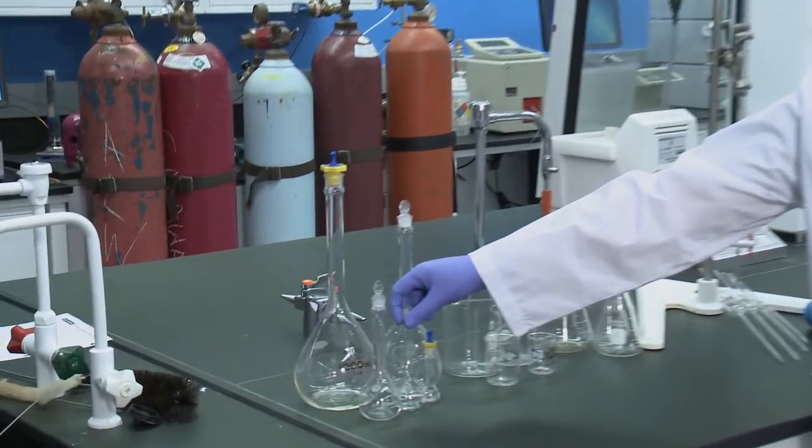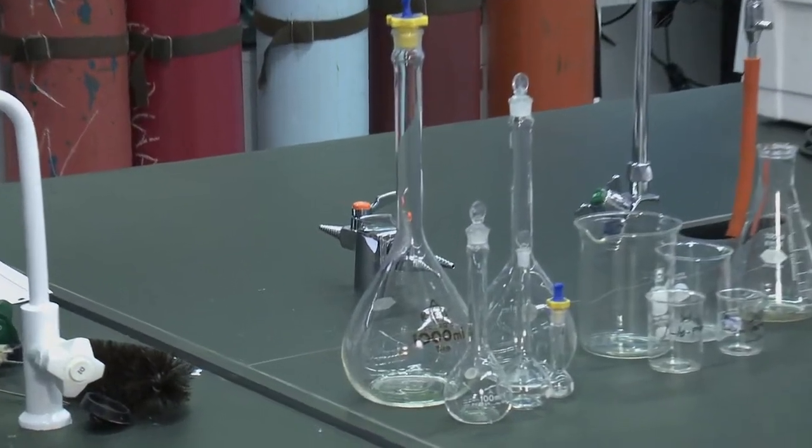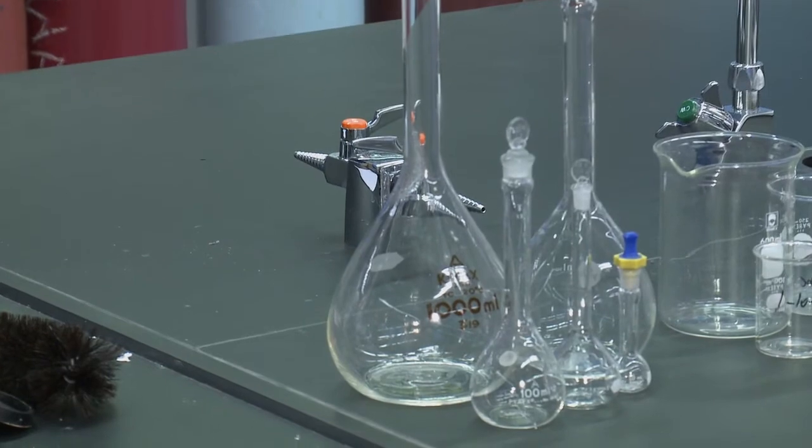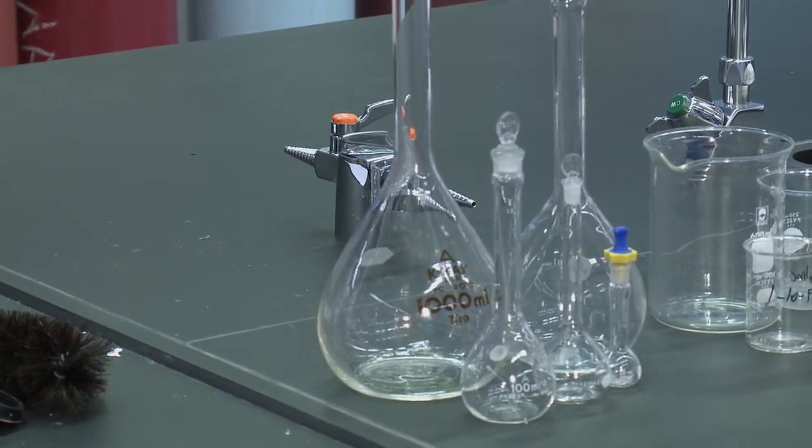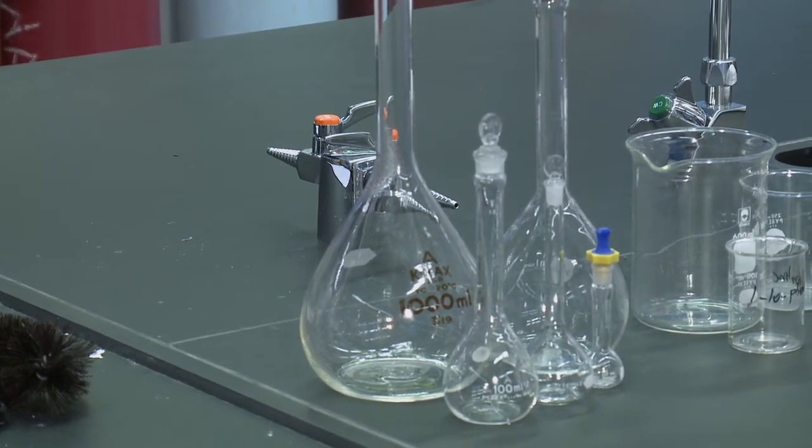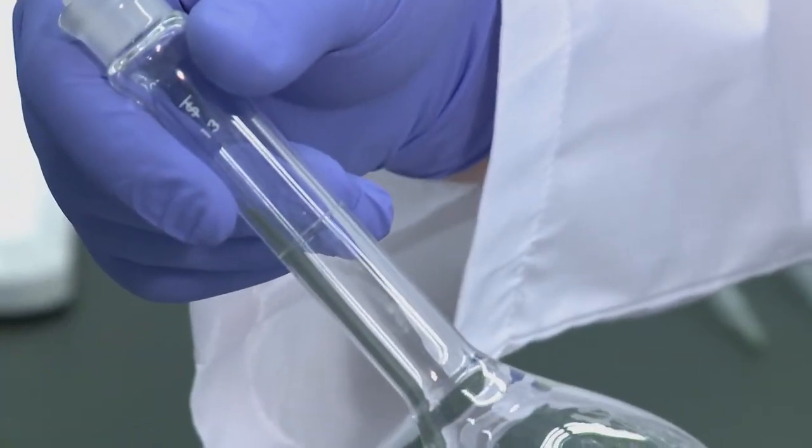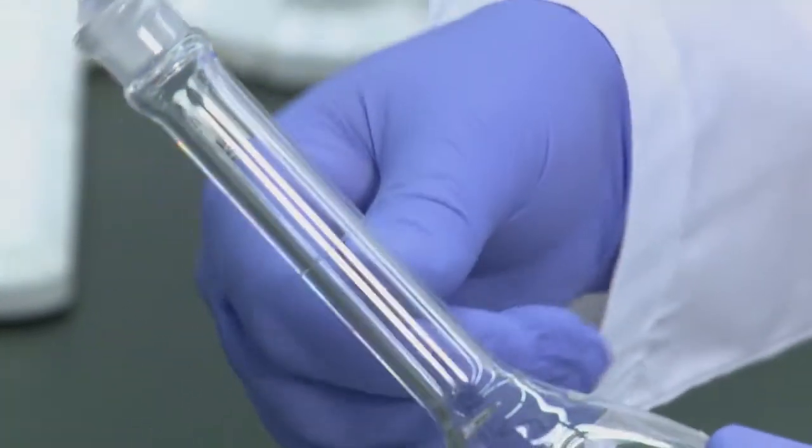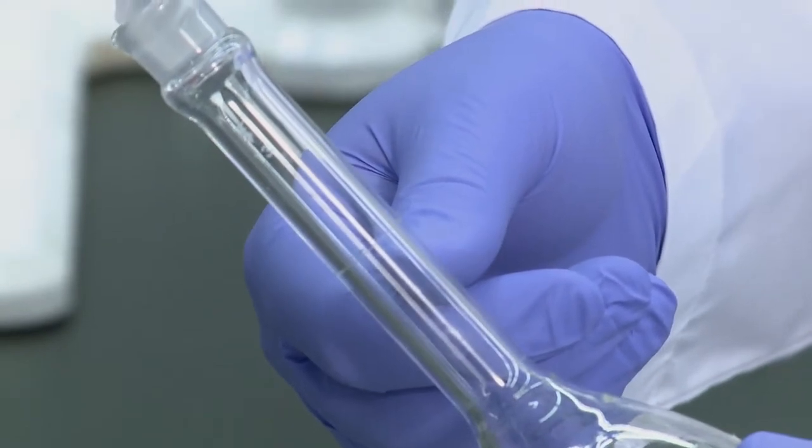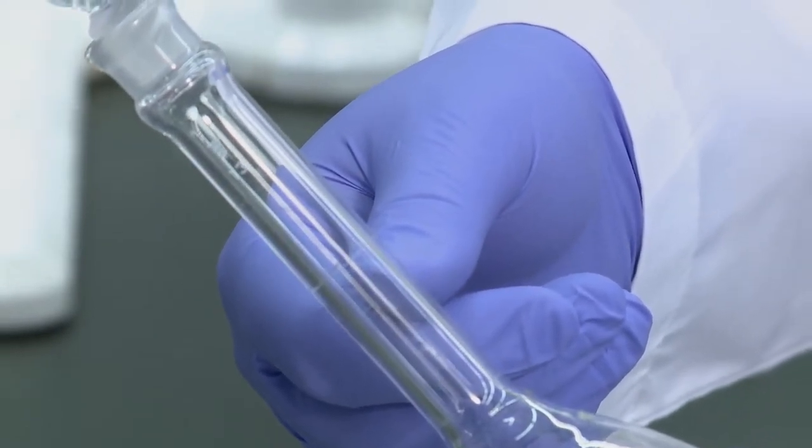First, we have various volumetric flasks. These are used to make very accurate concentrations of different solutions. Each one comes with a single mark on it and can only be used to produce the volume that is on the label of the flask. These will be used to produce most of your standards and unknown samples in experiments.